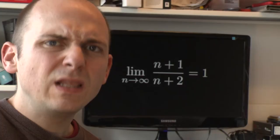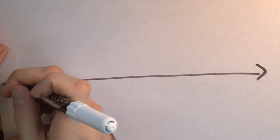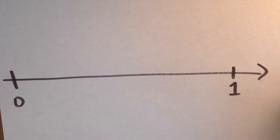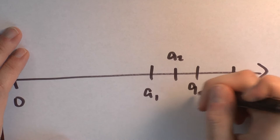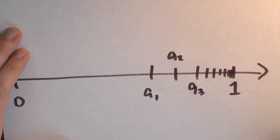Let me draw a picture of this. So here's a number line. Let's put 0 all the way over here, and 1 right here. And now I've got a bunch of terms of the sequence - here's the first term, here's the second term, here's the third term and so on. And as I go out further and further in this sequence, the terms get closer and closer to 1.